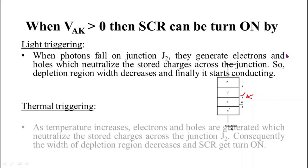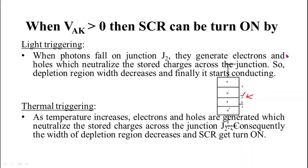Next method is thermal triggering. Again if anode to cathode voltage is greater than zero and it is less than forward break over voltage VBO, then junction J1 and J3 are forward bias and J2 is reverse bias. As temperature increases, electrons and holes are generated which neutralize the stored charges of junction J2.